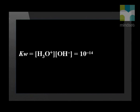The ionization constant of water is given as Kw equals the concentration of the hydronium ion multiplied by the concentration of the hydroxyl ion. The value of Kw is 10 to the exponent negative 14. The concentration of the hydronium ion and the concentration of the hydroxyl ion are each equal to 10 to the exponent negative 7.